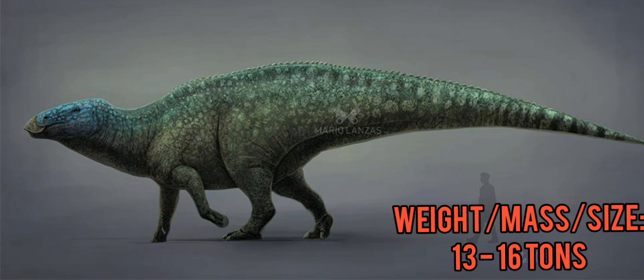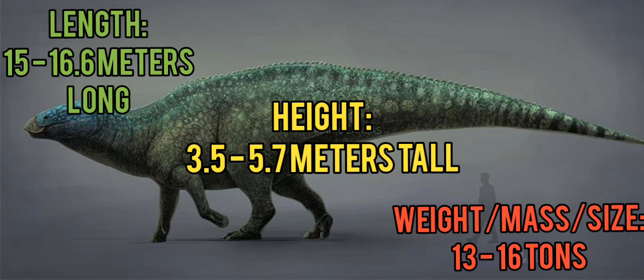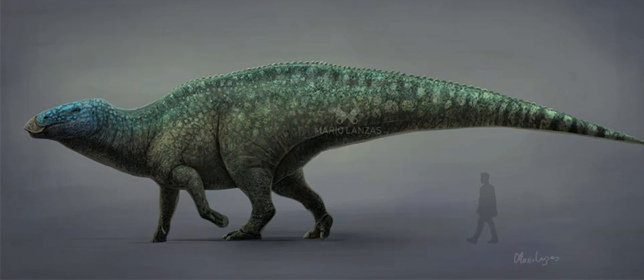Shantungosaurus was the largest non-sauropod dinosaur ever, which means it was the largest hadrosaur ever, weighing up to 13 to 16 tons. On all fours it could be around 3.5 meters tall, but when on its hind legs it could be as tall as around 6.5 to 7 meters tall, and its length could be around 15 to 16.6 meters long.